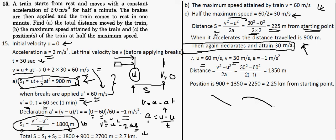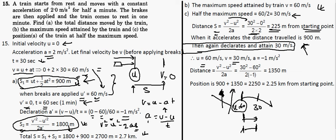During deceleration, the initial velocity is 60 m/s and the final velocity is 30 m/s, since we want the position when speed is half the maximum. Using v² - u² = -2as, we find the additional distance traveled during this deceleration. The overall position of the train is the sum of the distance during acceleration (900 m) plus this additional distance during deceleration to 30 m/s. Adding both gives the total position.